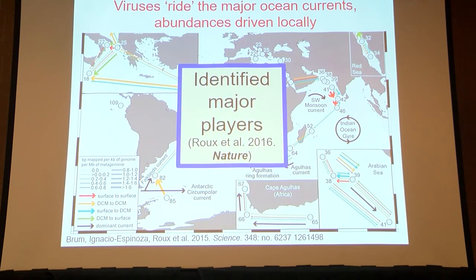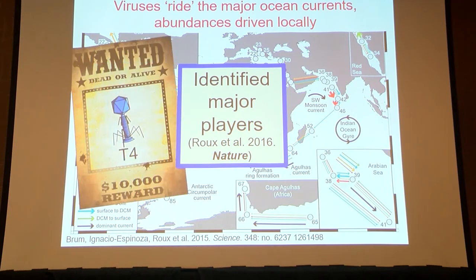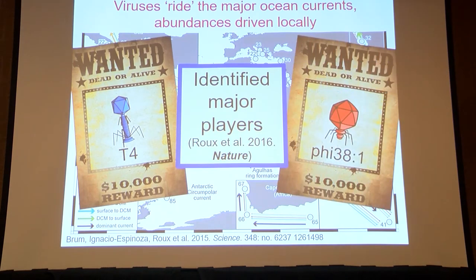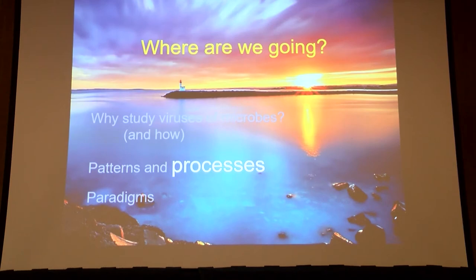Out of this dataset we can begin to identify some of the major players. One of the most abundant viral types is phage T4, or at least T4-like phages, which are the basis of a lot of molecular biology. Another of the most abundant viruses is 538-1 — keep in mind it was an abundant virus in these ocean datasets, and you'll hear more about it later.